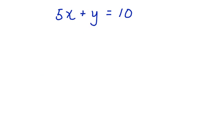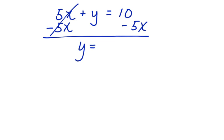What about one like this? Well again, this is not written in the form y equals mx plus b. So we're going to subtract 5x from both sides. These cancel. Bring down the y equals negative 5x plus 10.